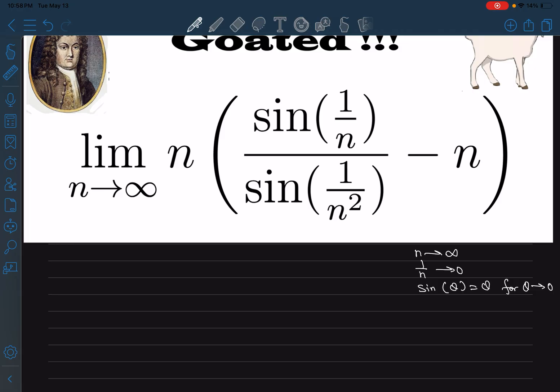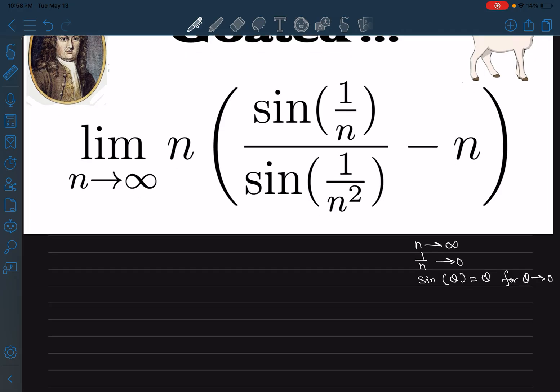What most of you might be thinking is to do this limit, you can just write this as 1 over n, 1 over n square minus n, and that means n, n minus n.